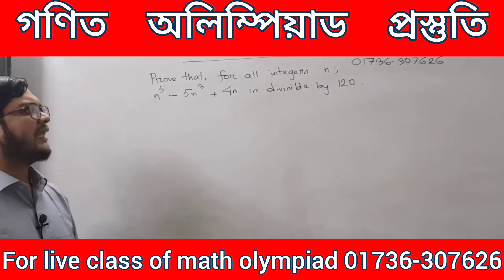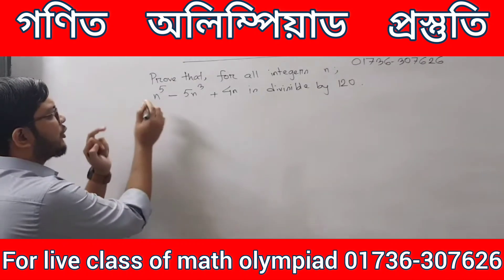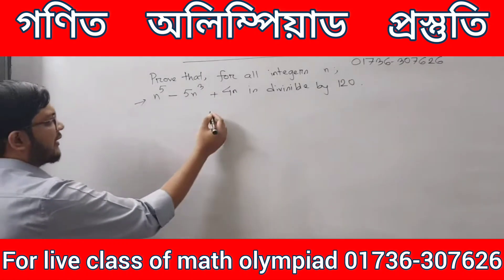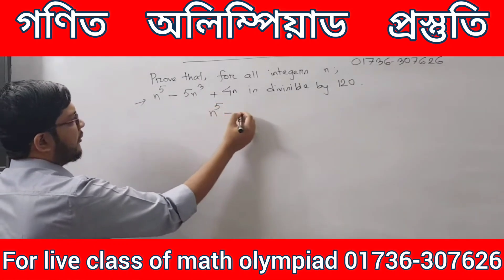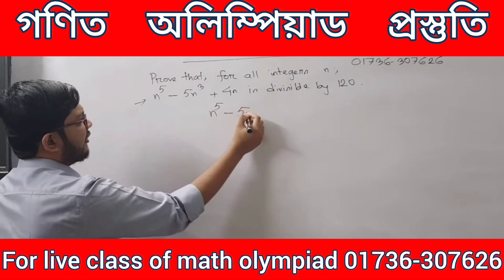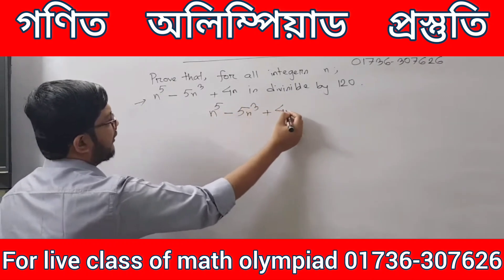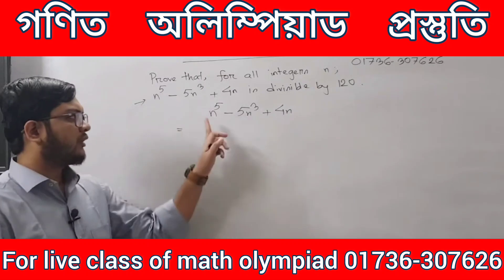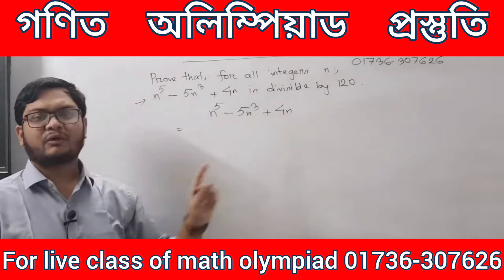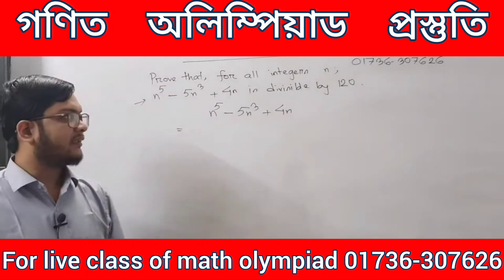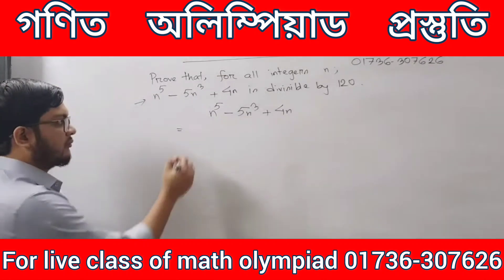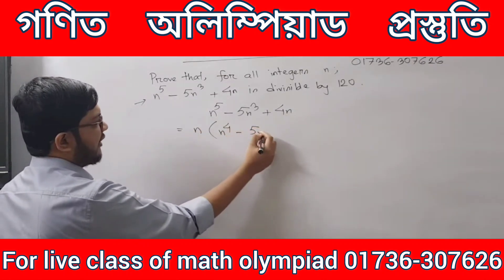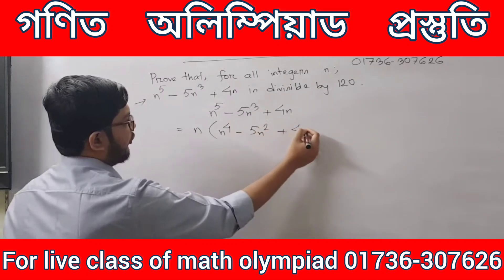The first thing that we do is rearrange this one. Let's rearrange: n to the power 5 minus 5n cube plus 4n. The first step — take n common, so we have n into n to the power 4 minus 5n square plus 4.